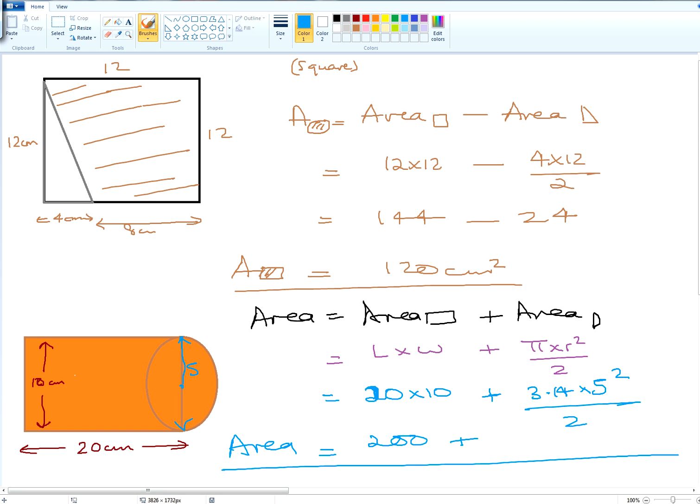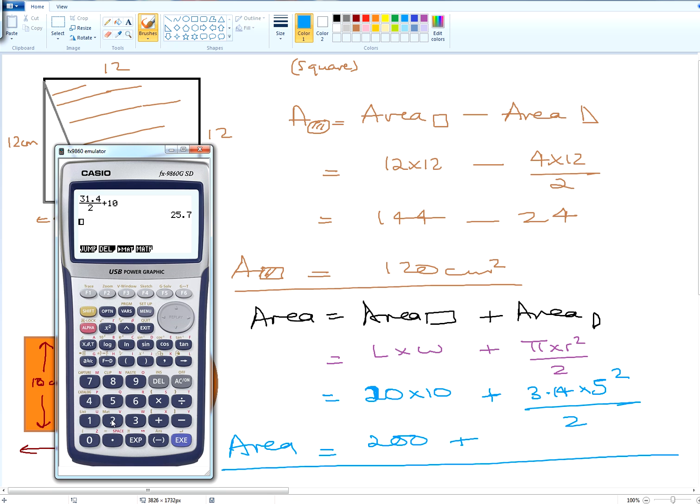Let's work that out. It's 200 plus 3.14 times 5 squared divided by 2. So what do we get? 239.25.